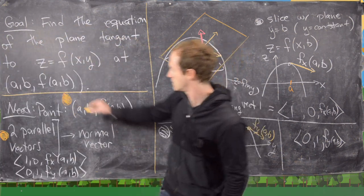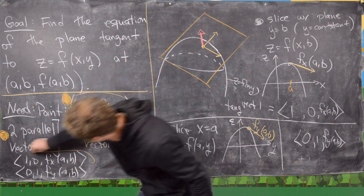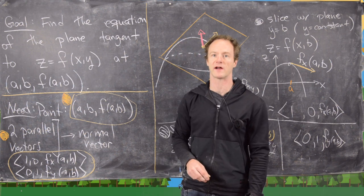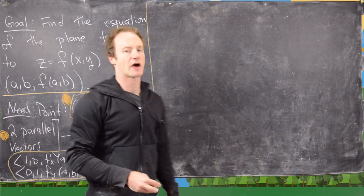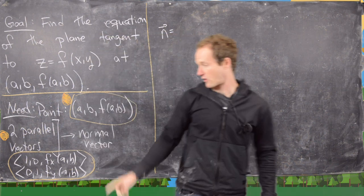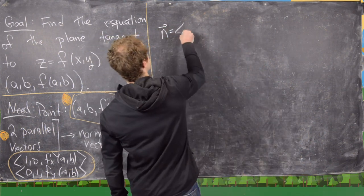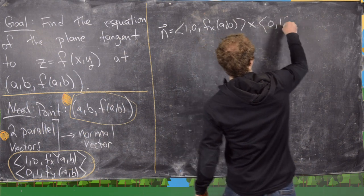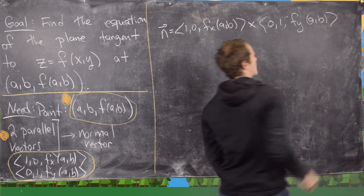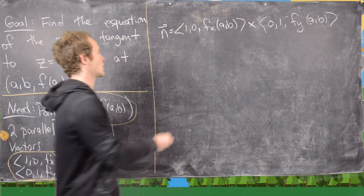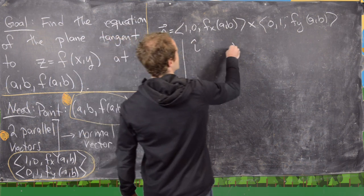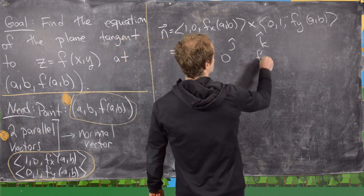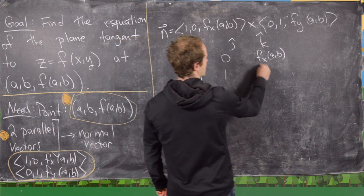We have a point and two vectors parallel to our plane. Now we'll cross those to get a normal vector and then write down the equation. The normal vector is given by the cross product of (1, 0, f_x(a,b)) crossed with (0, 1, f_y(a,b)). We use the three-by-three determinant method: i, j, k in the first row, then our first vector in the second row, and our second vector in the third row.